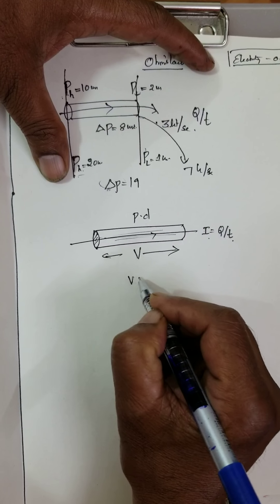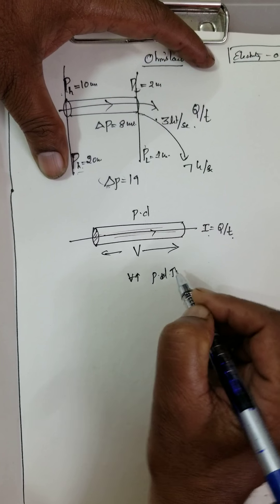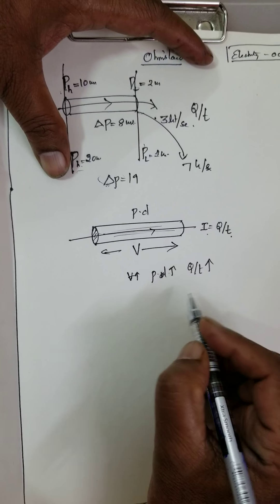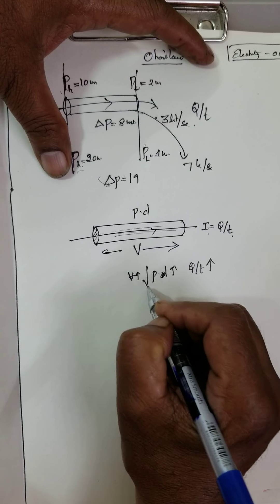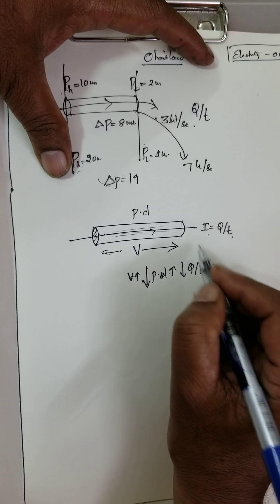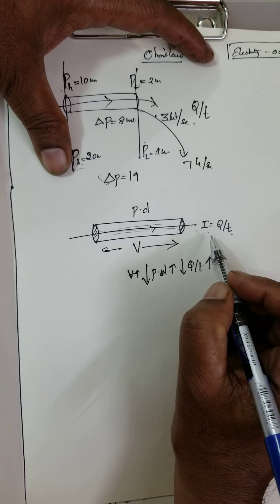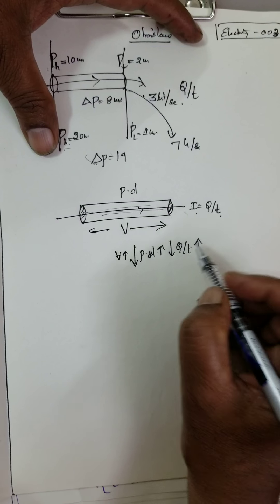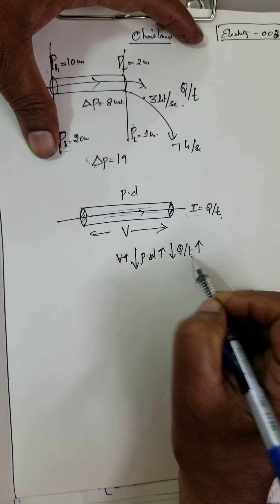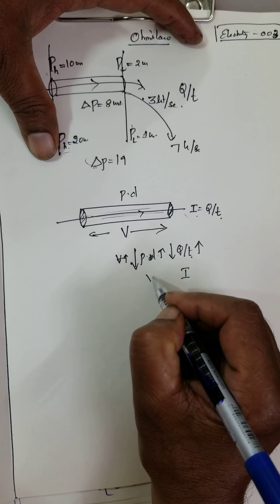When the pressure difference or potential difference is high, the quantity of charge coming out per second is also high. When the pressure difference or potential difference is low, the quantity of charge passing through the cross-section of a conductor is also low. Therefore, quantity of charge passing per second is nothing but the electric current, and V is the potential difference.